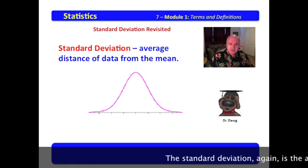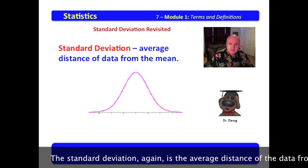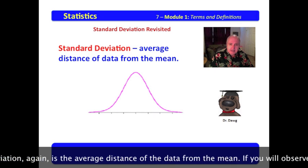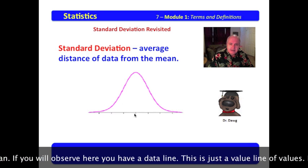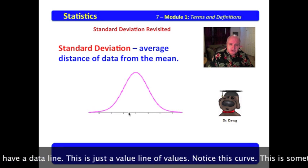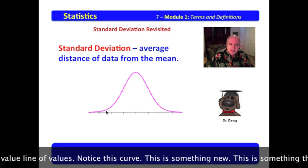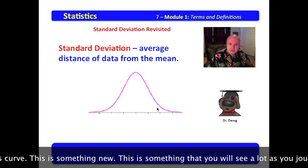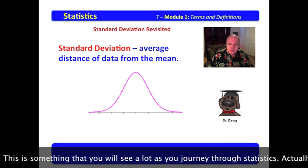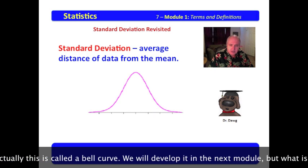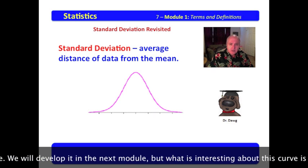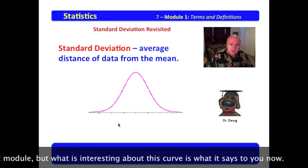The standard deviation, again, is the average distance of the data from the mean. If you will observe here, you have a data line. This is just a value line of values. Notice this curve. This is something new. This is something that you will see a lot as you journey through statistics. Actually, this is called a bell curve.